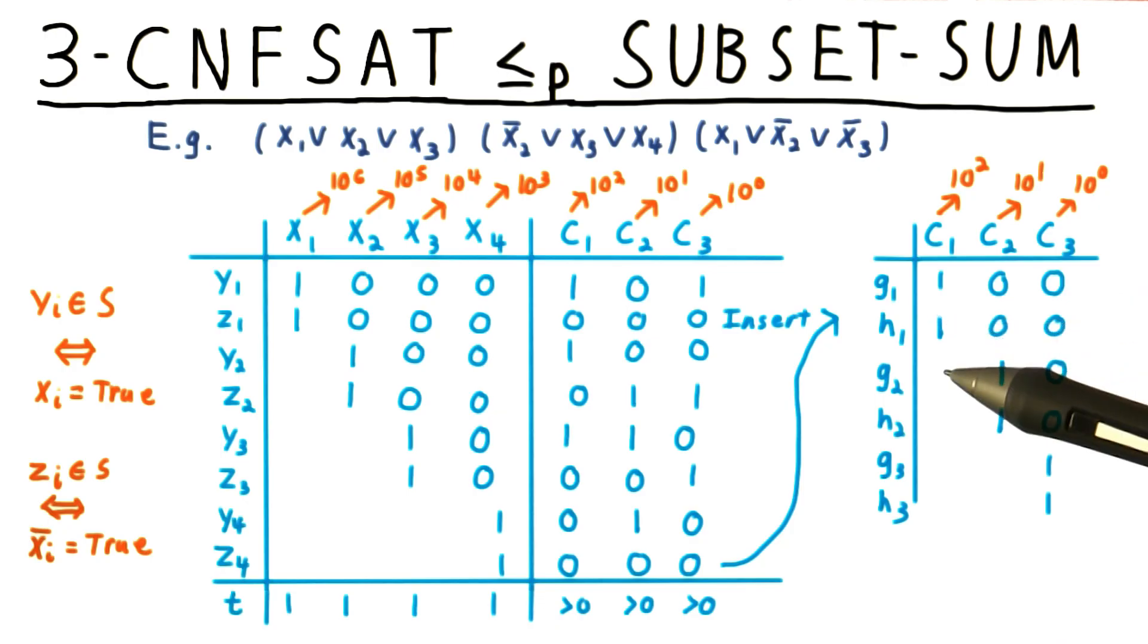We'll call them gj and hj. So thus, g2 and h2 have a one in the column for c2, and zeros everywhere else. This allows us to set the desired number to be three in the clause columns.